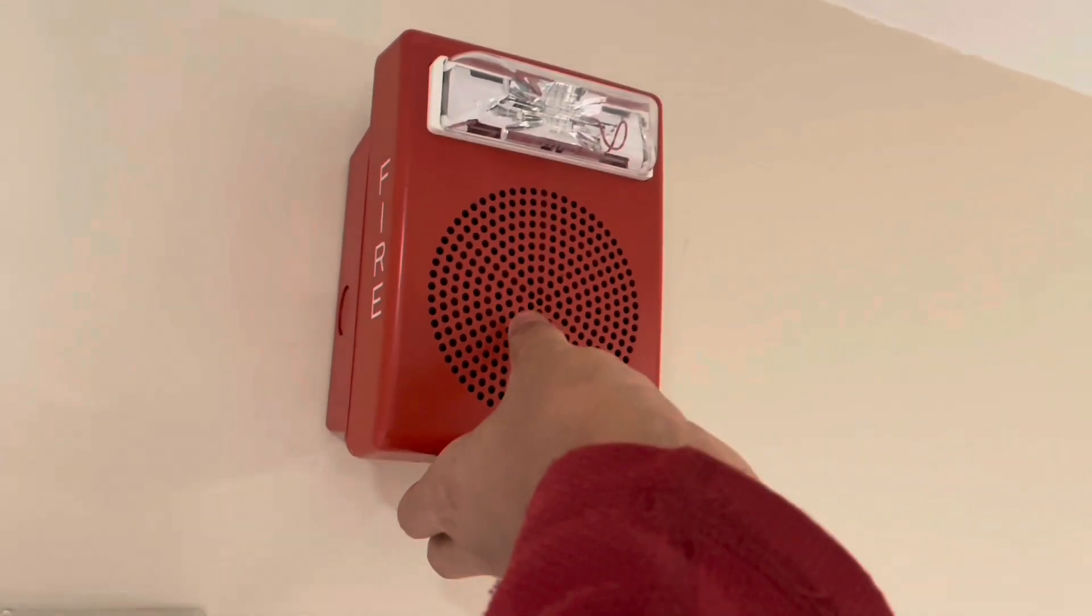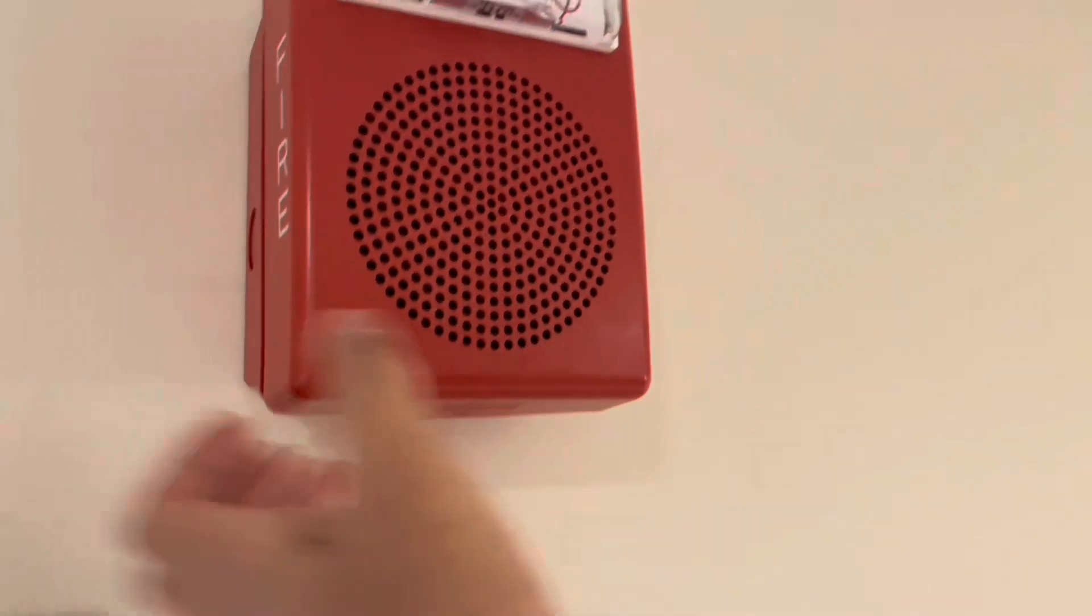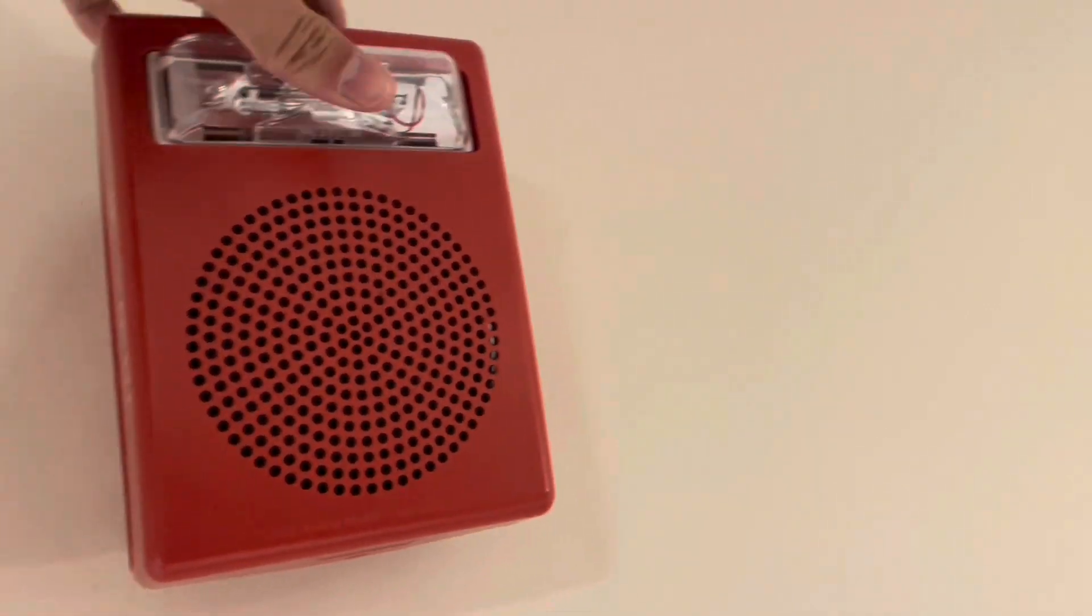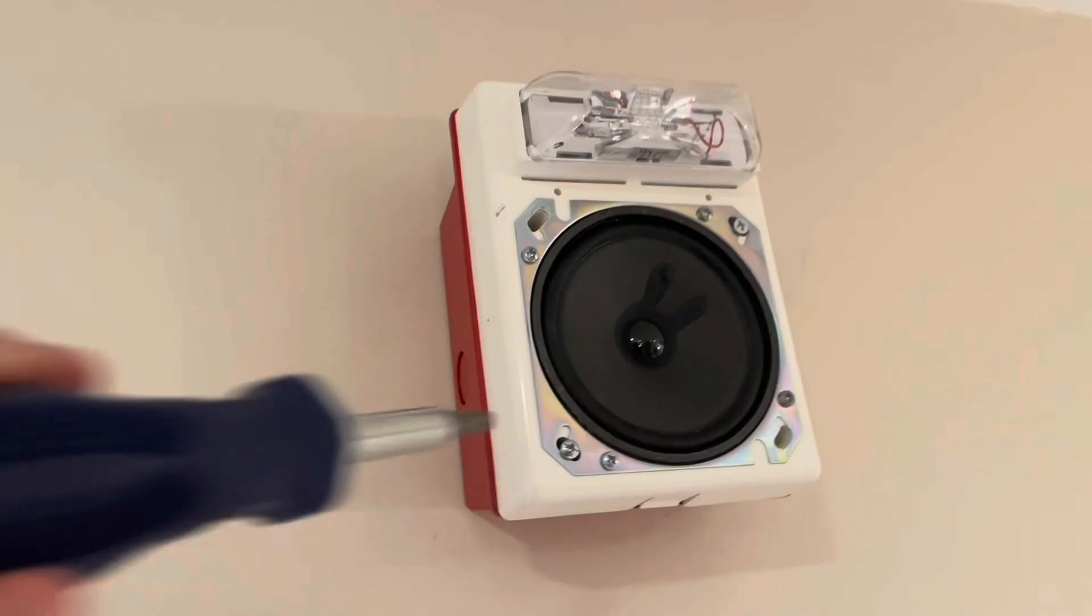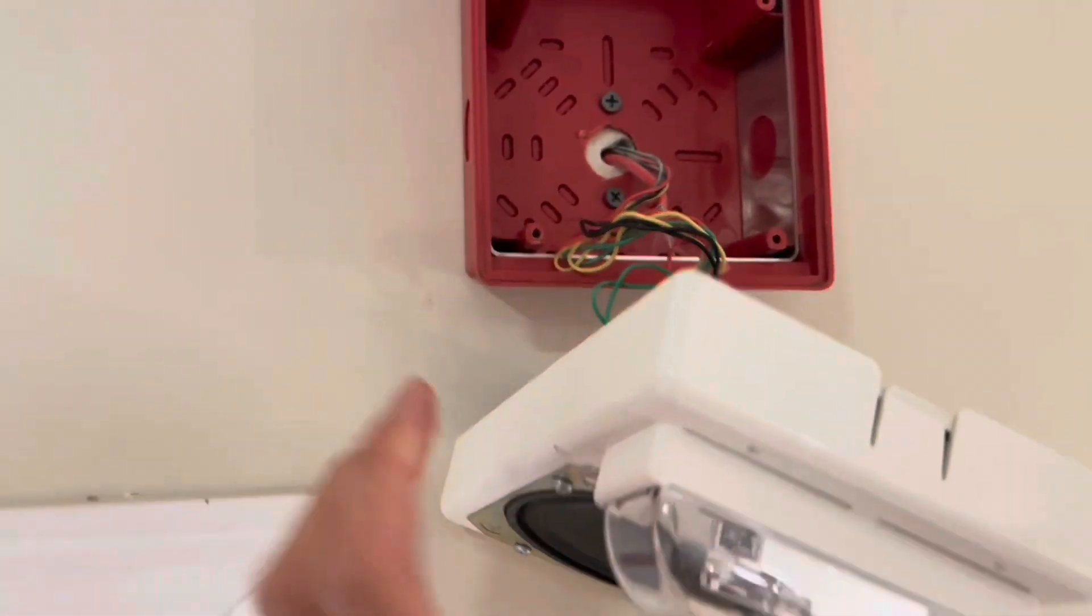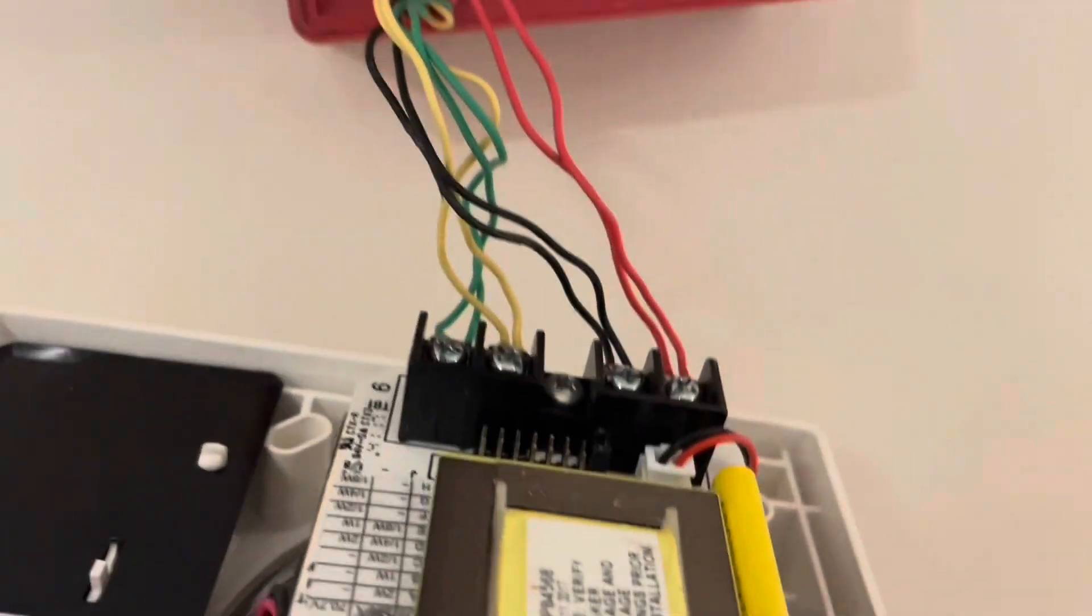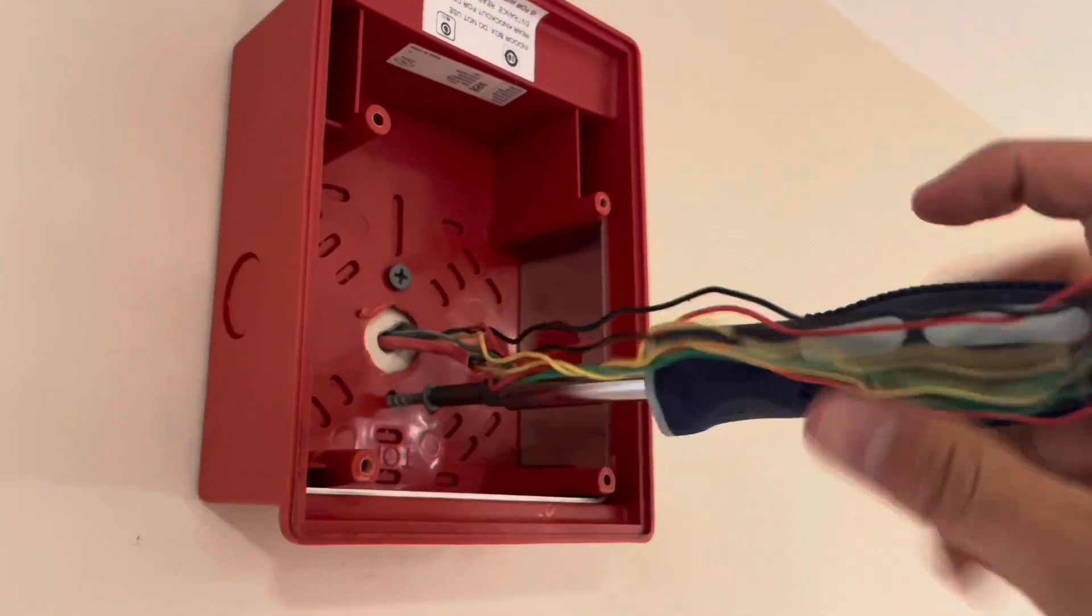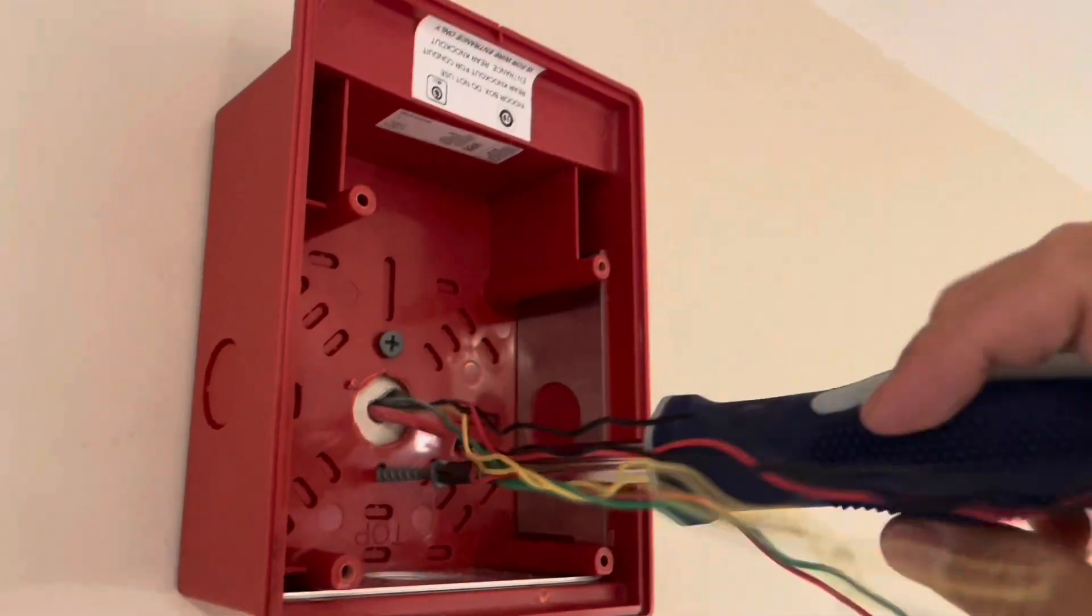Let's go ahead and start by removing the cover from these speaker strobes. Usually you can just pry them off with your hands if needed. You can put a screwdriver in these holes, but I'm going to go ahead and start unscrewing these units from the box. Let's go ahead and remove this unit from the box now and undo all these wiring connections. I want to go ahead and remove the screws from this box and remove it from the wall.